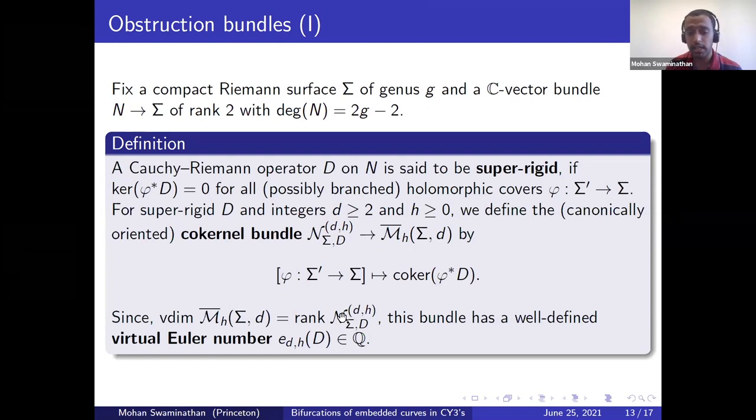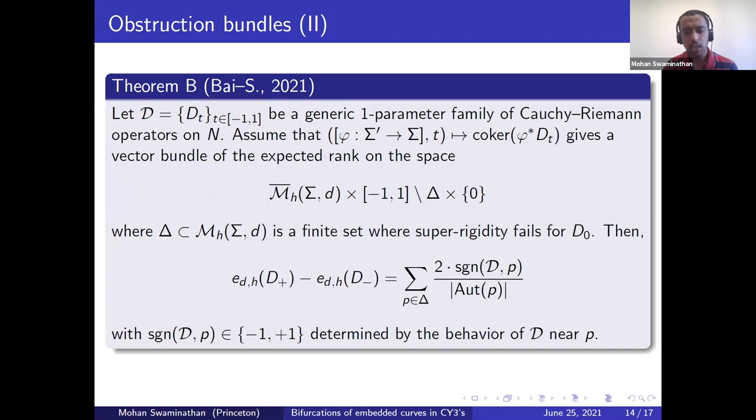Moreover, you can check that the rank of this bundle is the same as the virtual dimension of the moduli space on which it's defined. So it has a well-defined virtual Euler number. This is a rational number again because of some orbifold behavior in the moduli spaces. And we want to study how this number changes when D undergoes a bifurcation. That is in a one parameter family when D loses super rigidity.